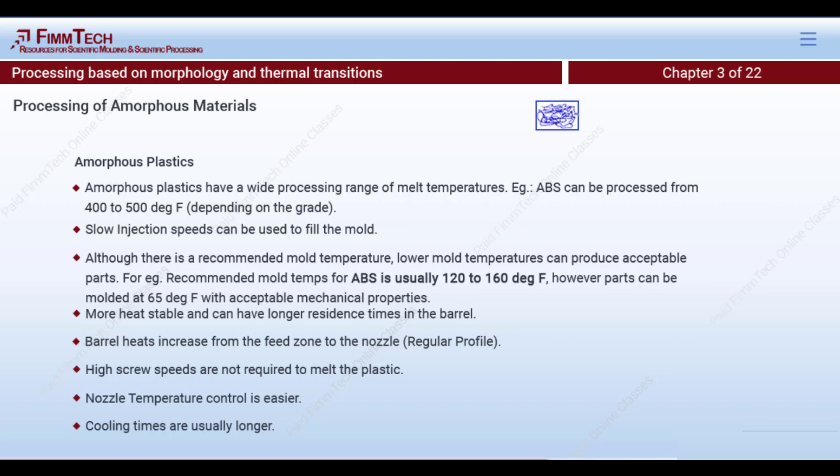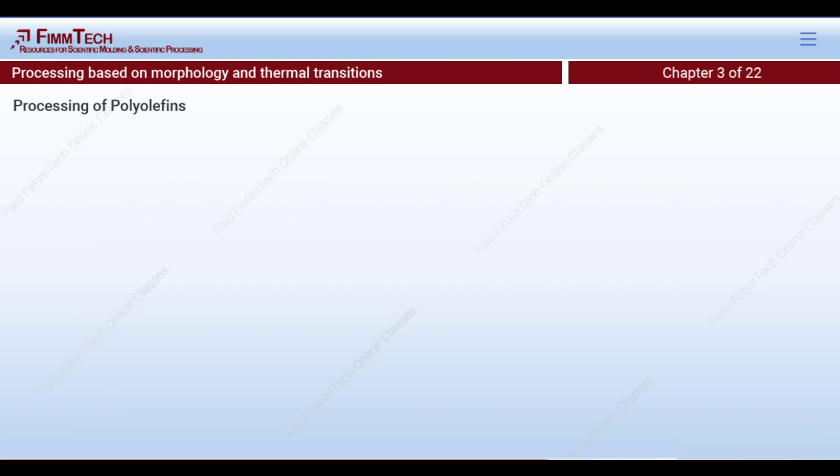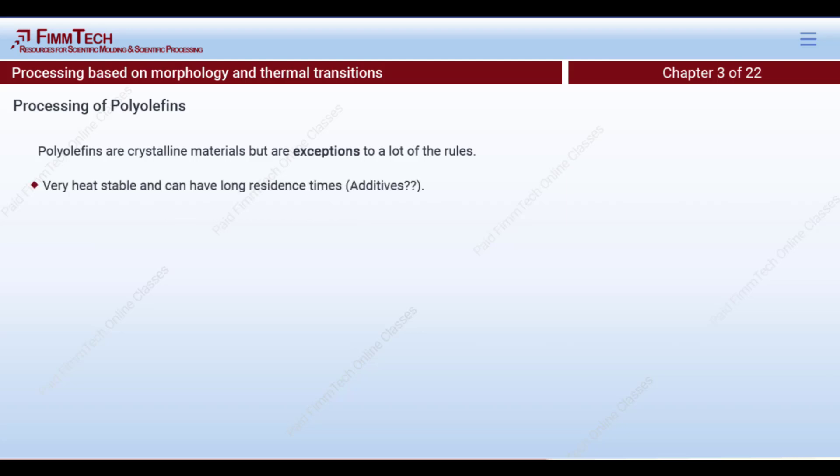Polyolefins — polyethylene and polypropylene — are crystalline materials but are exceptions to many of the rules discussed. They are very heat stable and can have long residence times. Polypropylene or polyethylene can remain in the barrel for 20 to 30 minutes or more without degrading. You do need to be careful about additives such as colorants, which can degrade and cause discoloration, but the base polymers themselves do not degrade easily.